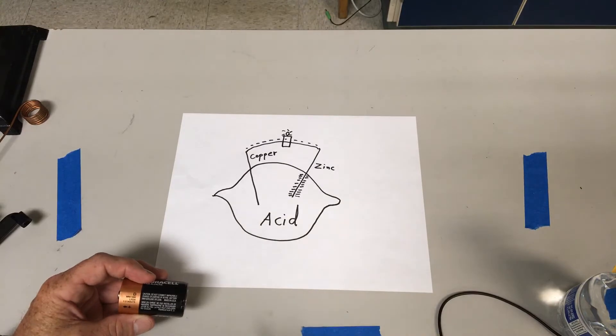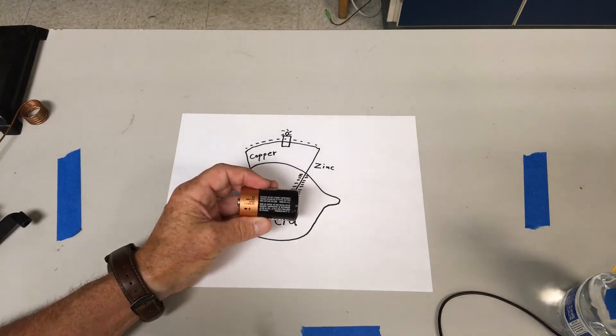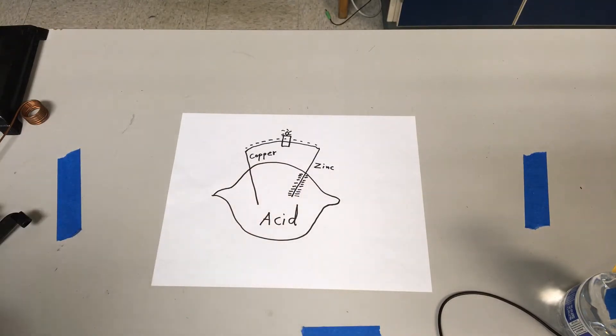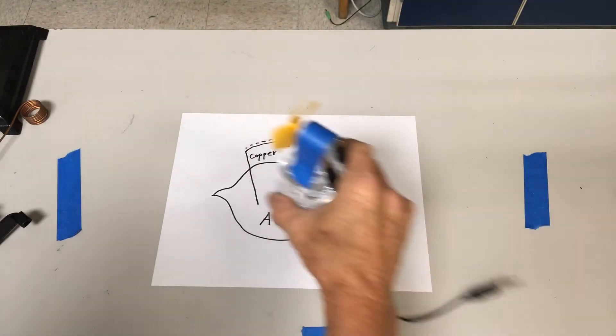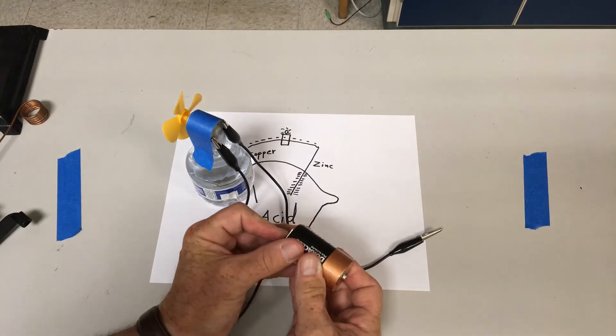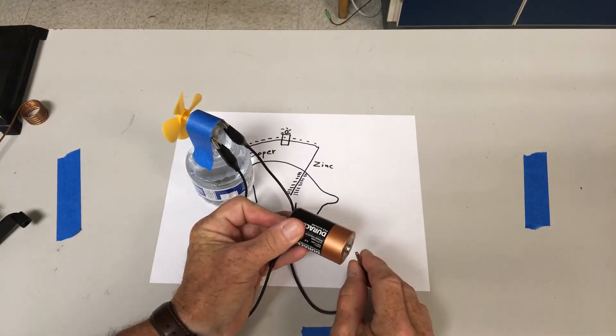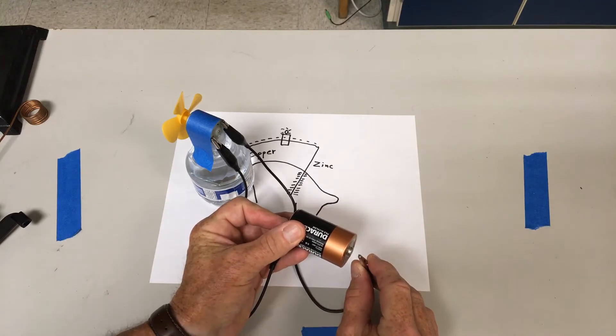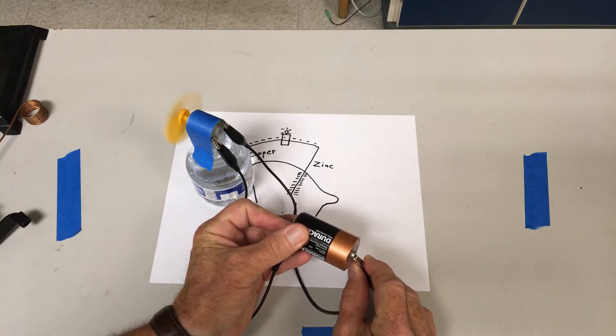When the electrons in the system don't want to move anymore, you've got a dead battery. Batteries are very nice because they can do work for us. I can attach this battery to this fan, and as soon as I touch the ends, the electrons start to flow, and when the electrons start to flow, my fan goes on.